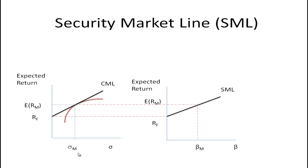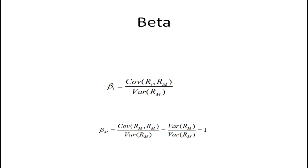Here we're going to use beta or systematic risk rather than total risk. If you draw across, the risk-free rate is in the same place and the expected return on the market is in the same place, giving you two points and a straight line. Keep in mind that the risk on this axis is systematic risk, not total risk. Beta or systematic risk for asset i is the covariance between the returns of stock i and the returns of the market, divided by the variance of the returns of the market.